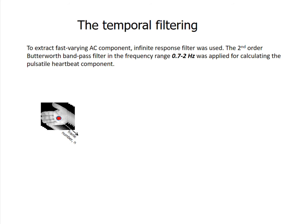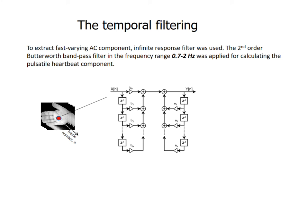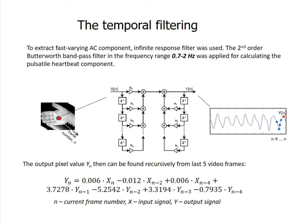Temporal processing of video was performed by calculating pixel intensity changes in a pre-defined frequency range. To extract the pulsatile component, an infinite impulse response filter was chosen. The second-order Butterworth band-pass filter in the frequency range 0.7 to 2 Hz was applied for calculating the heartbeat component. The output signal can then be found recursively from the last 5 video frames according to this formula. The advantage of the infinite impulse response filter is simplicity and computational inexpensiveness, making it suitable for real-time rPPG signal processing.